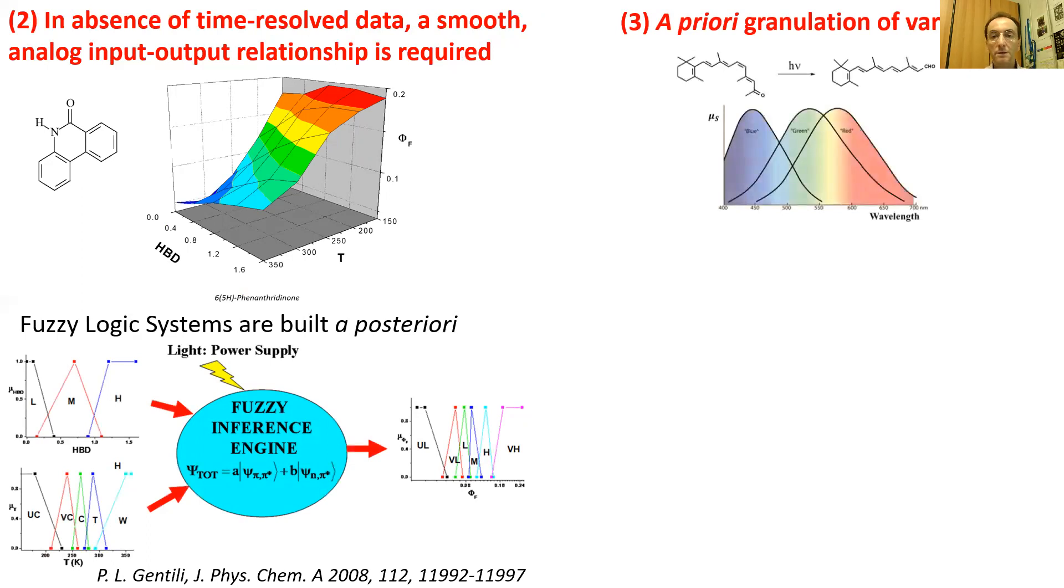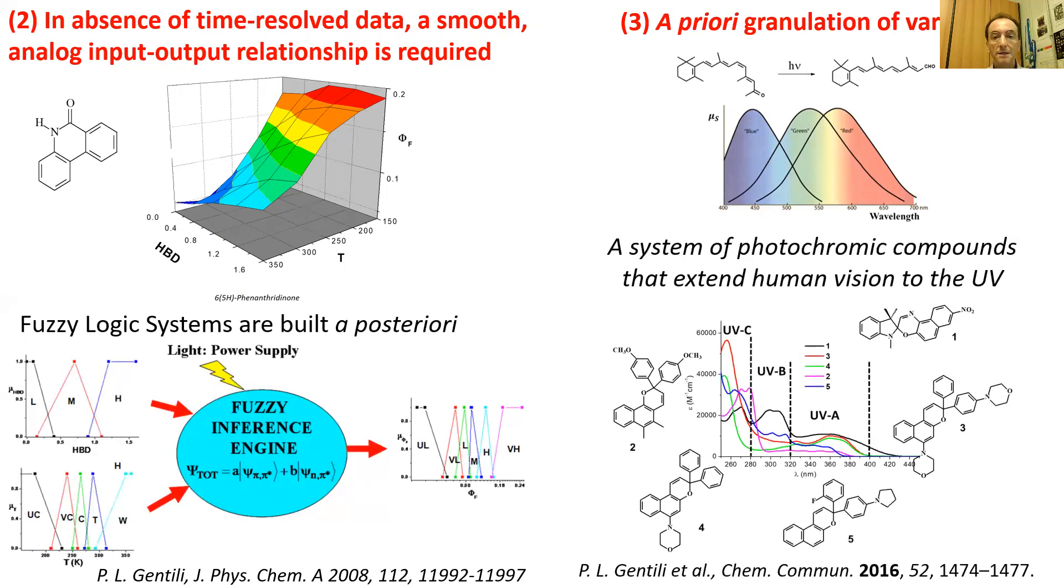For example, we have shown that the three retinal opsins partition the visible spectral region in three fuzzy sets. This molecular granulation of the visible region confers humans the power of distinguishing colors. Such an approach has been applied to designing a system with three or more photochromic compounds, which has allowed to extend human vision to the UV region.